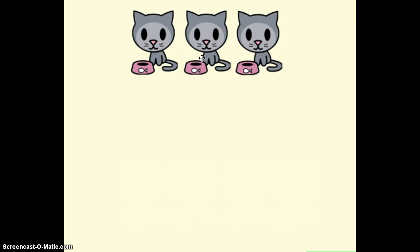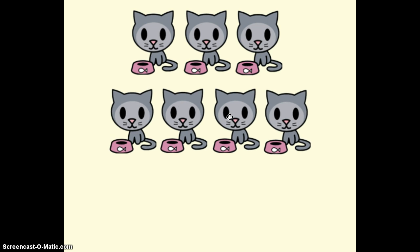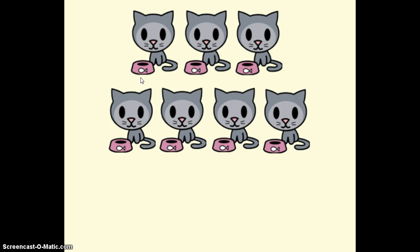We're starting with three cats eating food — that's one small group. Here's another small group of four cats eating food. In addition, we put the two small groups together and count them all in the one large group: one, two, three, four, five, six, seven. So we have seven cats eating in all.